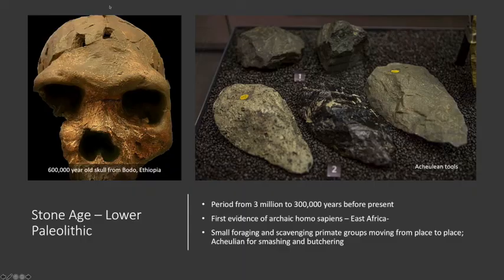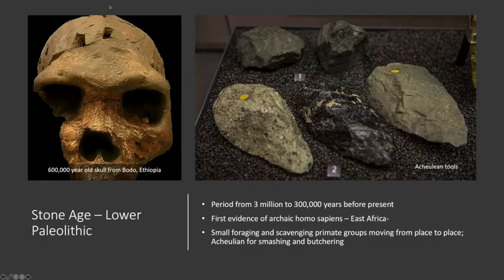We see very early stone tools worked very simply, but which can be used for cracking open bones to get at marrow, which we believe was one of the important food sources for early archaic Homo sapiens — scavenged bone marrow from either the natural death of other organisms or from kills made by other predators that humans were able to access.